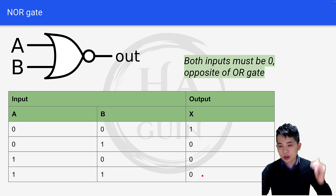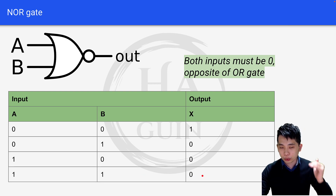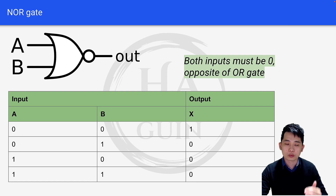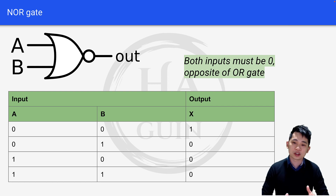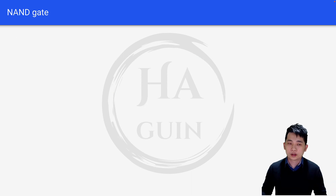It means that both of the inputs must be 0 in order to produce output equal to 1 for the NOR gate, which is the opposite of the OR gate.